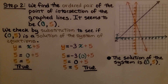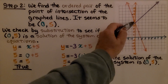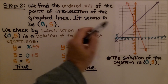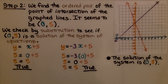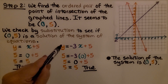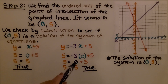We can see where they intersect. For step 2, we find the ordered pair of the point of intersection. The x value is 0 and the y value is 5, giving us (0, 5). We verify by substitution: in y = x + 5, substituting gives 5 = 5, true. In y = -3x + 5, substituting gives 5 = -3(0) + 5 = 5, also true. So the solution of the system is (0, 5).